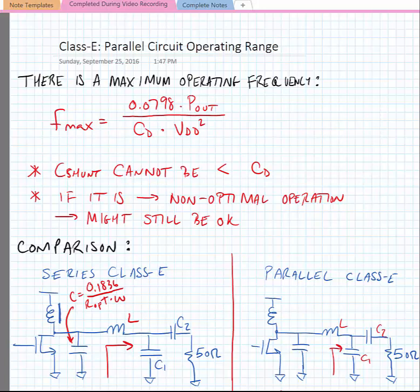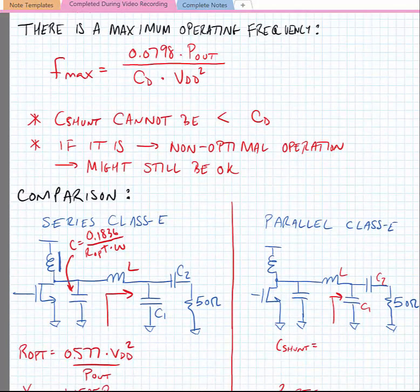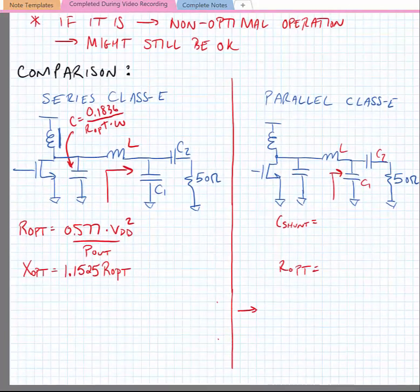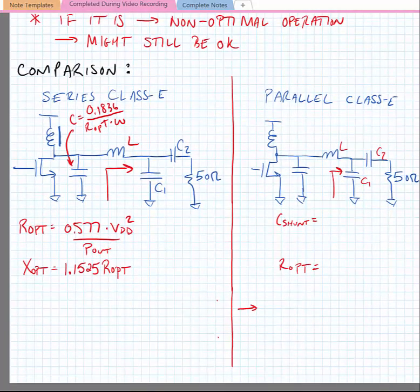So if we do a comparison between the series class, the classical class E circuit, we have the values for capacitance, optimum termination resistance, and series reactants shown in the figure.